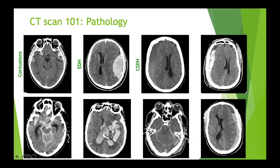A chronic subdural hematoma: if you glance quickly at these scans, chronic subdurals get missed a lot — especially acute-on-chronic — because their density is very similar to brain matter. You have to look at the ventricles and look more closely at why there's obvious mass effect. Sometimes it's not obvious, and you really need to investigate why there's mass effect on a scan.